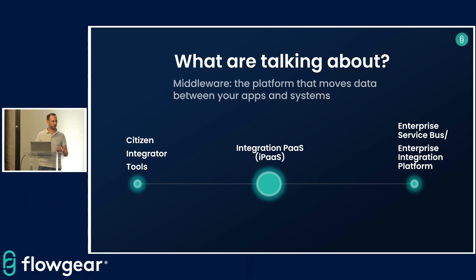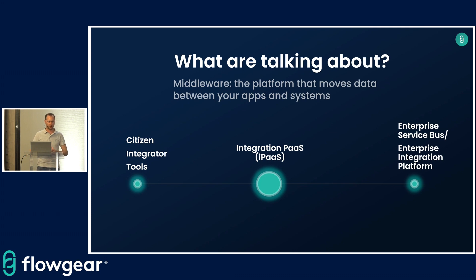We've done some work on trying to position where Flowgear fits into the space here. Things like citizen integration tools are a very different category — they're all inherently multi-tenant platforms, and the costings don't work any other way. The level of control you can exert over those platforms is extremely limited, which is why there generally isn't huge uptake in enterprise. What we're specifically talking about is iPaaS, or integration platform as a service, and what you can look at doing to start on a security journey there.